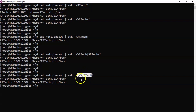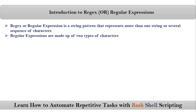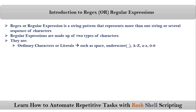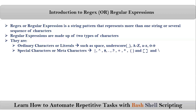Now, to write this pattern or regex, we have to learn some concepts. We will see them step by step. To create your regular expressions, we have two types of characters. They are ordinary characters or literals — such as space, underscore, alphabets A to Z (upper or lower), and 0 to 9 numbers. Second are special characters or meta characters. We have some more characters, but they are going to be created using these special characters only.